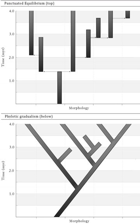In linguistics, RMW Dixon has proposed a punctuated equilibrium model for language histories, with reference particularly to the prehistory of the indigenous languages of Australia and his objections to the proposed Pama-Nyungan language family there. Although his model has raised considerable interest, it does not command majority support within linguistics. Separately, recent work using computational phylogenetic methods claims to show that punctuational bursts play an important factor when languages split from one another, accounting for anywhere from 10 to 33% of the total divergence in vocabulary.